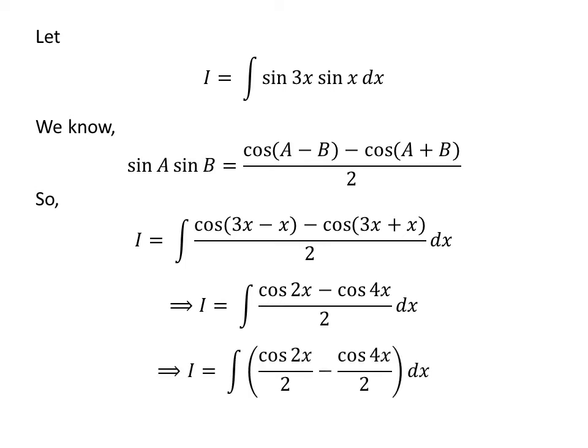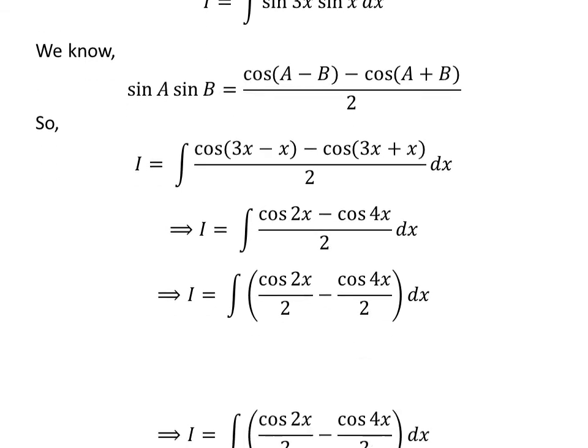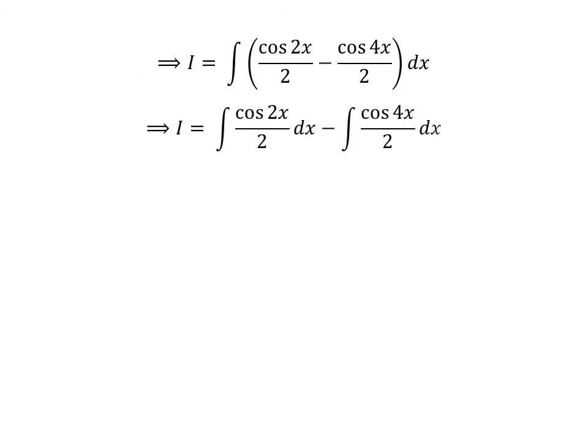The integrand can be expressed as the difference of two fractions. So I is equal to the integral of cosine of 2x upon 2 minus cosine of 4x upon 2, with respect to x. Applying the linearity property of integrals gives us I equal to the integral of cosine of 2x upon 2 with respect to x, minus the integral of cosine of 4x upon 2 with respect to x.